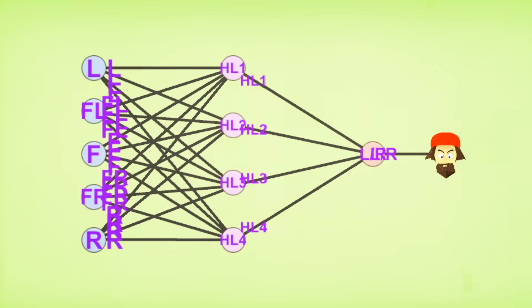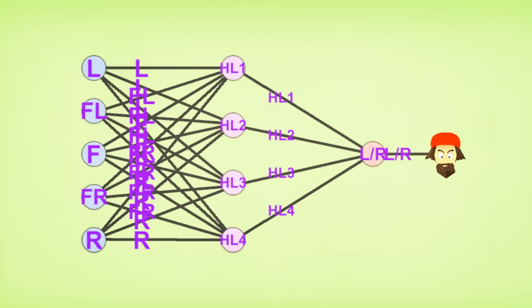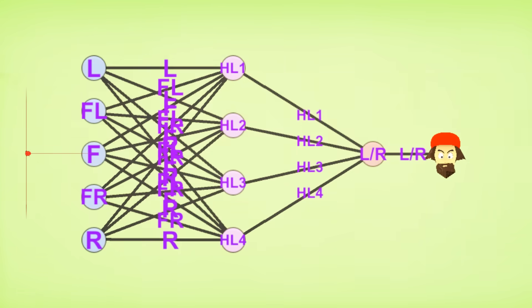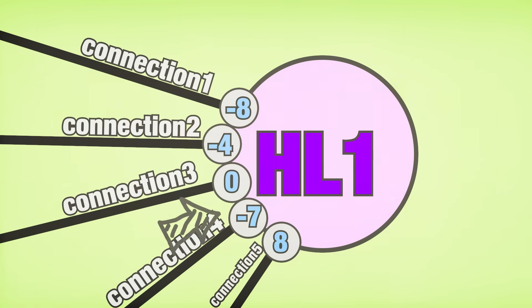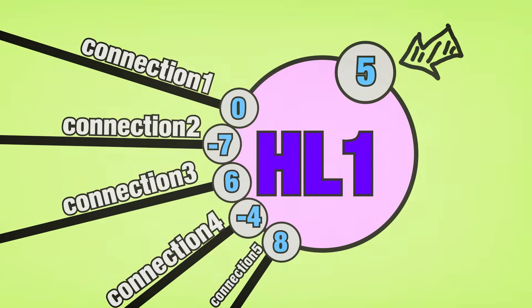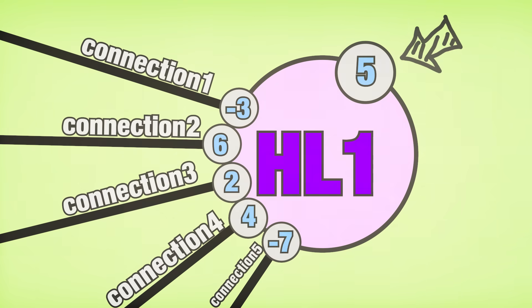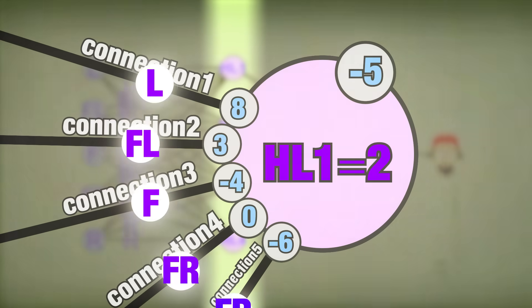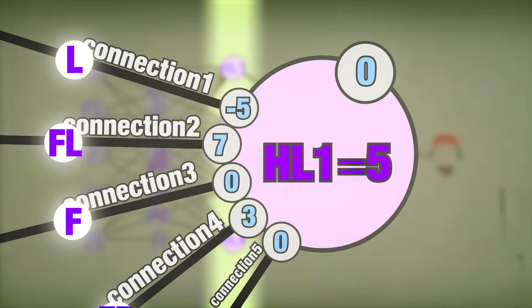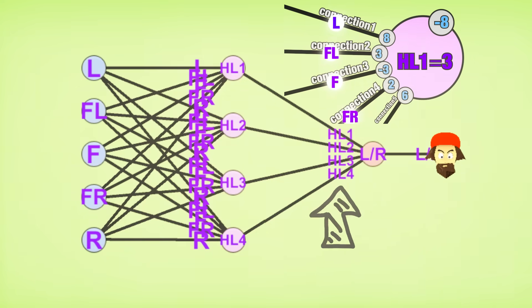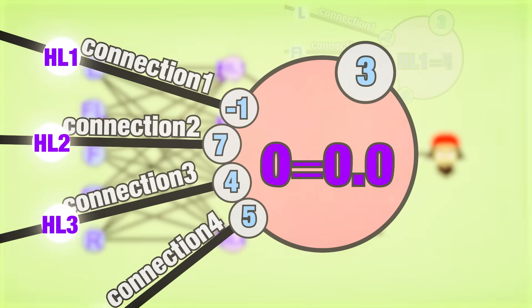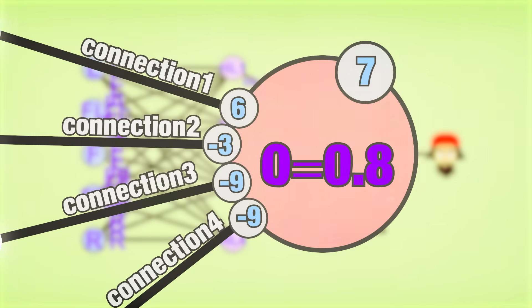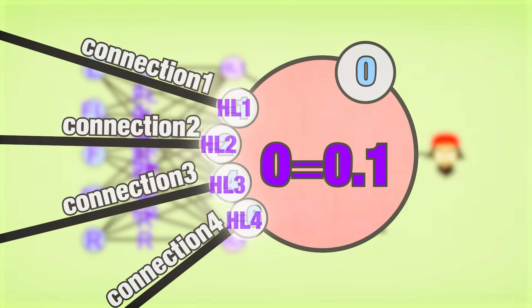Forrest will then pass this data to the four hidden layer nodes, which each have five connections, one for each input. Each connection will have its own strength value, and each node will have its own bias that will help shift the... too technical. Just for now know that the bias is very important for each hidden layer and output node. Now, with the hidden layer acting as Forrest's brain, his brain will do some calculations on the five inputs using its connection strength values and biases. Those calculations are then sent to the one output node, which again has its own bias and connection strength values connected to each of the hidden layer nodes.